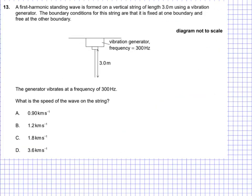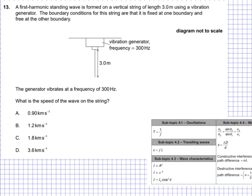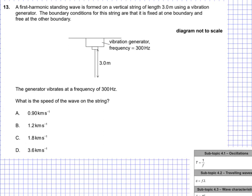For question 13, we have a harmonic standing wave being formed on a vertical string that is three meters long. We're told that it has boundary conditions whereby it is fixed at one end and free at the other. We're dealing with waves and wavelengths. We have a first harmonic standing wave being formed by this vibrating source. This string here is three meters long, and it's going to vibrate such that we have a fixed end right here at the top, and then at the other end it's going to be free. In other words, we would represent this as a node and an anti-node.